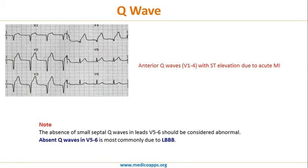It is important to remember that the absence of small septal Q waves in leads V5 and V6 should be considered abnormal. Absent Q waves in V5 and V6 are most commonly due to left bundle branch block. MCQs have been asked specifically on this point.